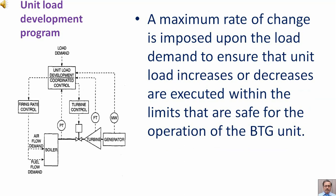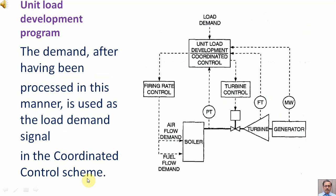A maximum rate of change is imposed upon the load demand to ensure that unit load increases or decreases are executed within the limits that are safe for the operation of the boiler-turbine-generator unit. The demand, after having been processed in this manner, is used as the load demand signal in the coordinated control scheme.